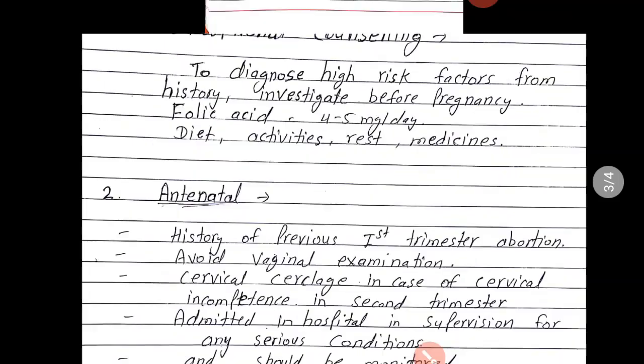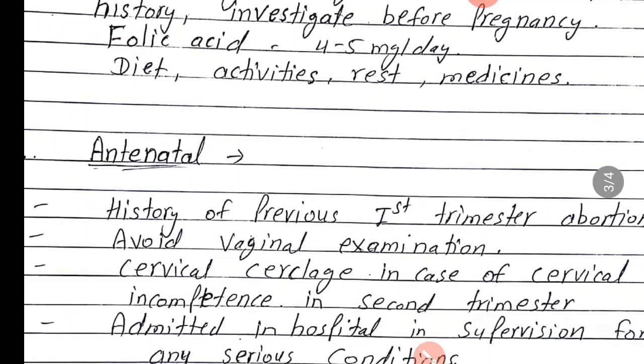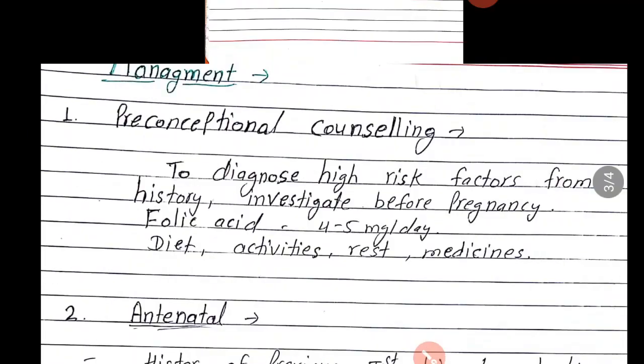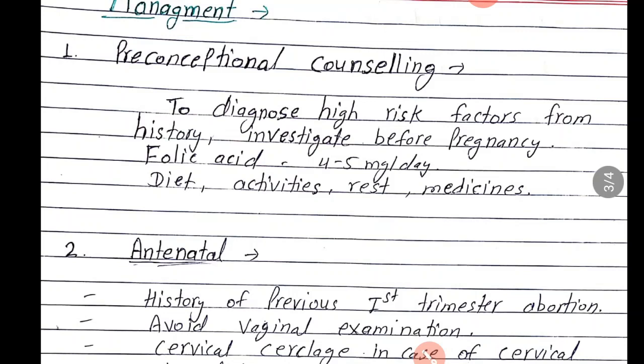Ab hum dekhte hain management. High risk pregnancy ko kaise manage kiya jaata hai. First: pre-conceptional counselling — yaani pregnancy se pehle hum kya kar sakte hain. To diagnose high risk factors from history and investigations before pregnancy.